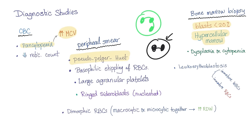The differential diagnosis of MDS includes B12 or folate deficiency — all of them can lead to macrocytic anemia, however MDS is the only one that can lead to dysplasia. Aplastic anemia — both aplastic anemia and MDS can lead to pancytopenia, but only MDS will have hypercellular marrow. Myelofibrosis — both can cause nucleated red blood cells and low retic count, but in MDS there is no proliferation and no JAK mutation.